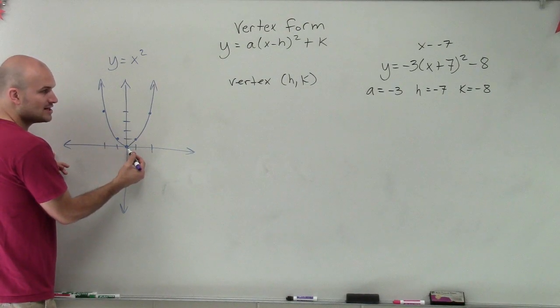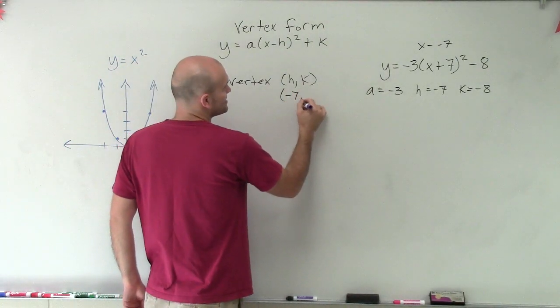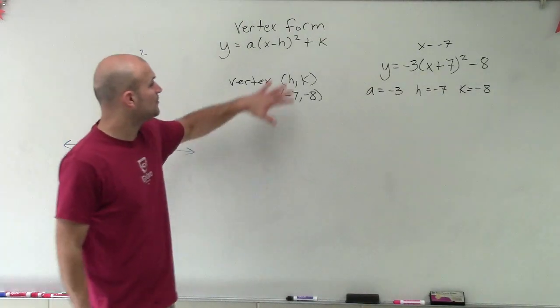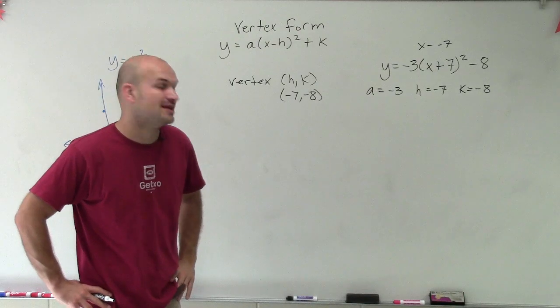So rather than my vertex being at 0, 0, it's now shifted seven units to the left and eight units down. So I'm going to say my vertex is negative 7, negative 8. And that's very helpful when we have an equation that's in vertex form.